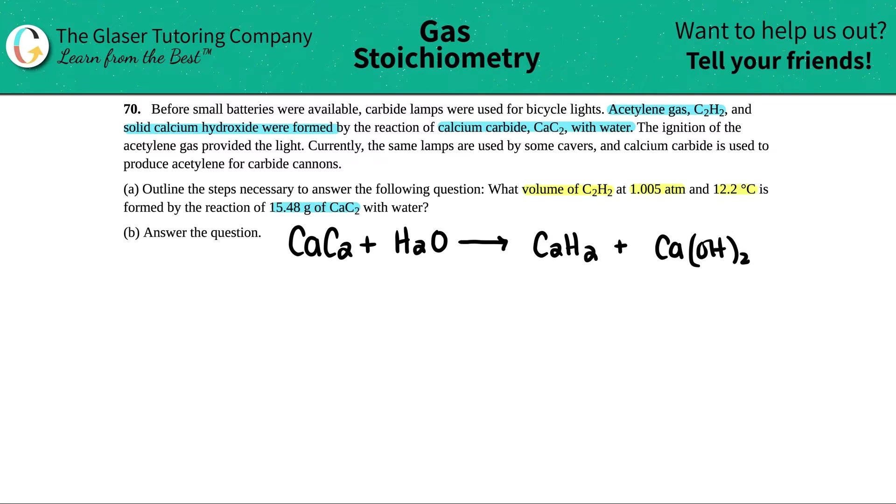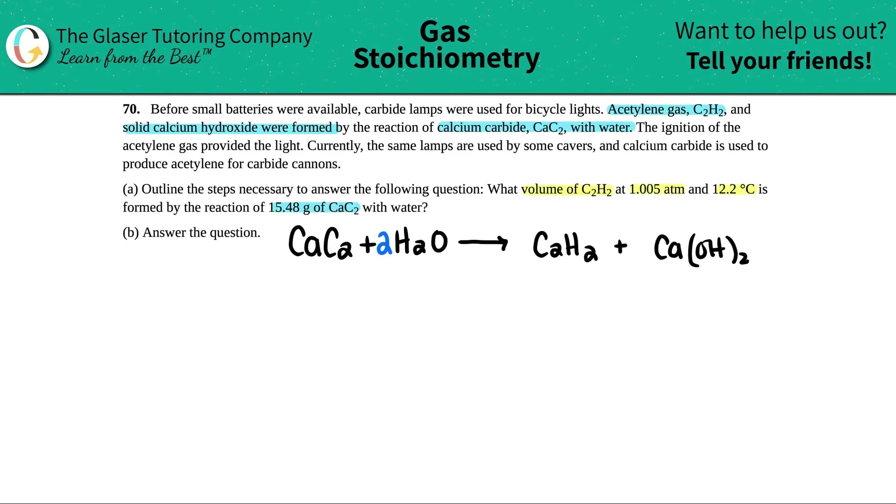This is CaOH2 because calcium has a plus two charge and hydroxide always has a minus one, so you crisscross the charges. Now just writing an equation is not good enough, you have to make sure it's balanced. The only thing you basically have to do, seems like I have two oxygens and I only have one on this side, so I'm going to put a two in front of here. We have four total hydrogens, two hydrogens plus two is four. I have one calcium on both sides, two carbons. So this is now my balanced equation.